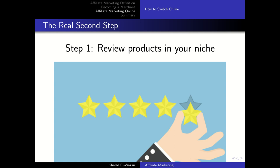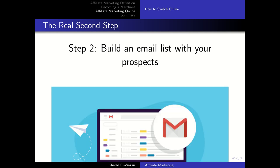A word to the wise: if your reviews aren't genuinely helpful, people will sense immediately that you are just trying to make a quick buck. The second step in becoming an affiliate marketer is to build an email list with your prospects.